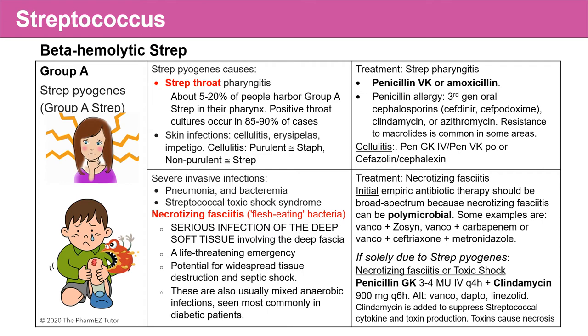So Strep pyogenes has a wide scope of causing infections — the most important being strep throat pharyngitis and necrotizing fasciitis.